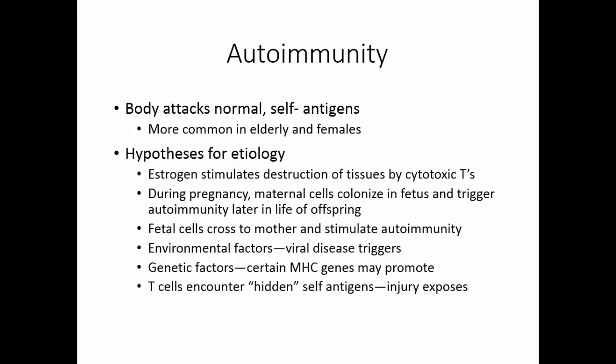Another theory is that T cells may encounter self-antigens that were hidden at the time of T cell education, and that some sort of injury then exposes this. For example, sperm in the male don't start developing until puberty, at which time the immune system is mature. Sperm never get in the bloodstream, so the immune system would never see them. However, if there is some sort of injury to the testicle and sperm enter the bloodstream, this could trigger an immune response to these proteins because the immune system would not recognize them as self.